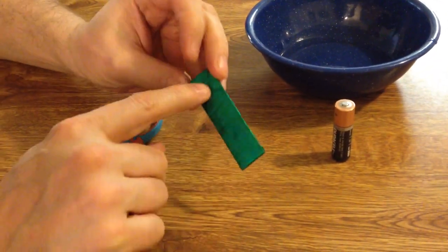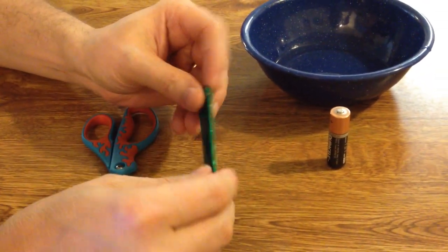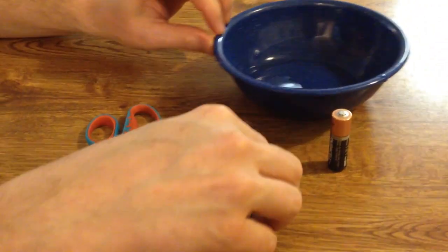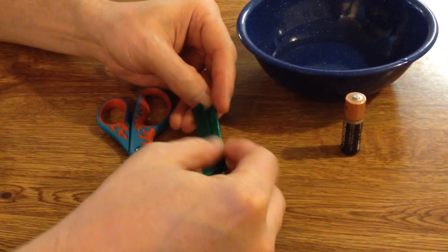Gum, okay, and this has got aluminum foil in the gum, and scissors, and we have a bowl here with a little bit of water in it so we'll show you what we're going to use with that.